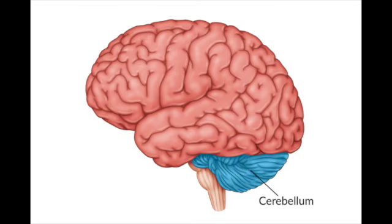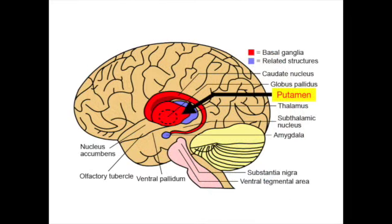Two other areas activated both when you do something and when you mental practice are the cerebellum and the putamen. The cerebellum is important for many motor functions, particularly coordination — it's actually really affected by alcohol, which is why someone who's had too much to drink is very uncoordinated. The putamen is part of a larger structure called the basal ganglia, and it's associated with controlling the speed of movements, whether you're imagining them or actually doing them. You don't see putamen activity when people are observing someone else do a motion — because you can't control the speed of what you're watching — but you do see the putamen activated both during mental practice and during actual performance.